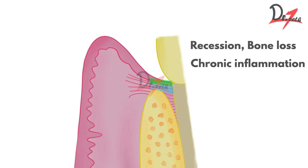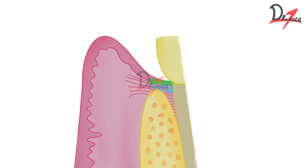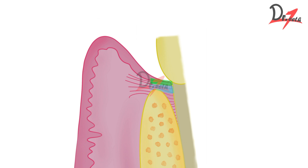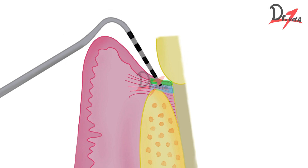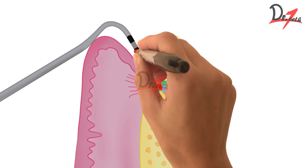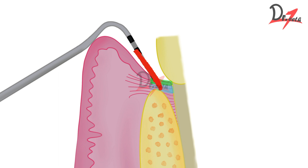Now, how do you determine the biological width? We discussed that it is around 3 mm on average, but it varies from patient to patient, so you have to find out the biological width for each patient. There is a procedure called bone sounding. In this process, you use a periodontal probe and push it through the gingival sulcus, through the epithelial attachment as well as the connective tissue attachment, until the tip of the probe contacts the alveolar bone. This technique is performed under local anesthesia.